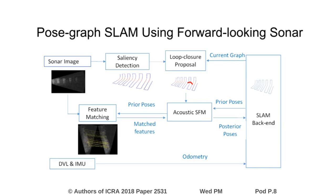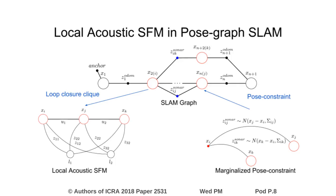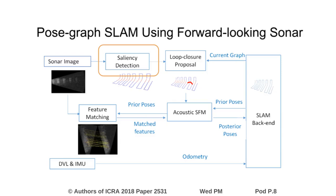In this work, we propose a real-time SLAM algorithm leveraging forward-looking sonar measurements in an efficient and robust manner. We extract vehicle motion constraints from sonar measurements through solving a set of local structure-from-motion problems. When a loop closure is detected, we construct and solve a local acoustic structure-from-motion within a small set of neighboring sonar images. The marginalized pose constraint will then be added to the global SLAM graph for vehicle pose optimization.